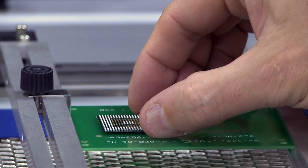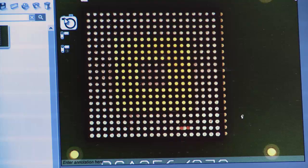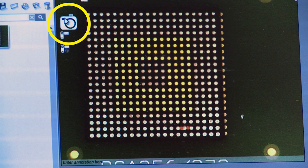Now place the component on the grid array with the bottom side up. With the camera software, take a photo of the ball pattern on the bottom side of the component.